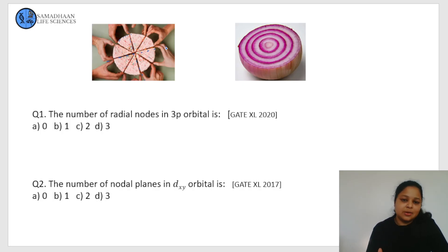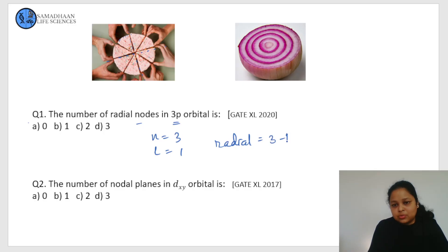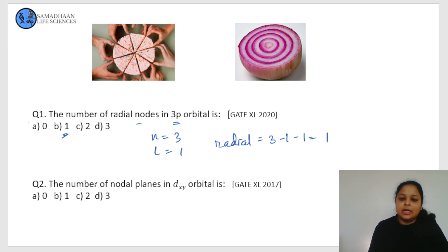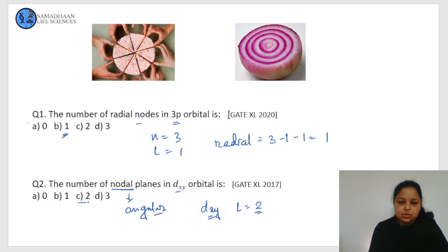Here are two examples from previous year exams. Question one: the number of radial nodes in the 3p orbital. For 3p, n equals 3 and l equals 1, so radial nodes equals 3 minus 1 minus 1, which is 1. The answer is 1. Question two: the number of nodal planes in the d-xy orbital. They are asking about nodal planes, meaning angular nodes only. For the d-xy orbital, l equals 2, so the number of angular nodes is 2. The answer is 2.